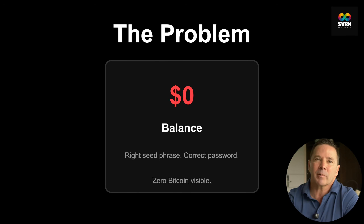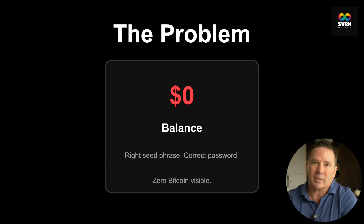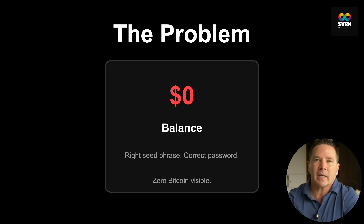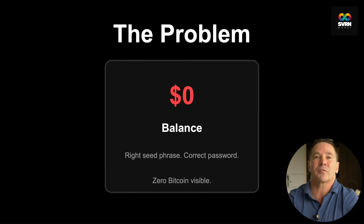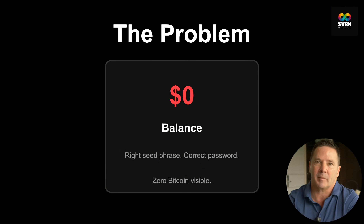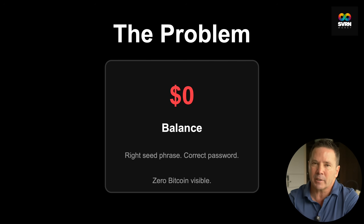After I changed my underwear, I realized it wasn't the seed phrase that was the problem. It was something called a derivation path. And I bet most of you watching this have no idea which one you're using or what the hell a derivation path even is. If you can't recover your own Bitcoin, you're not actually in control of it. So let's fix that gap in your Bitcoin knowledge base right now. This could be the most important Bitcoin lesson you'll watch all year.